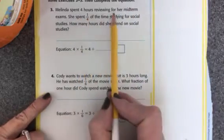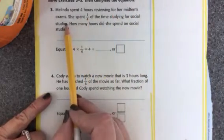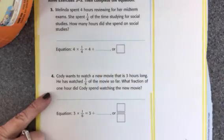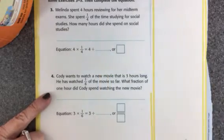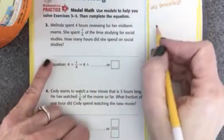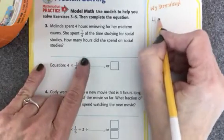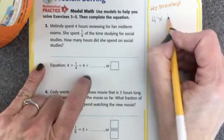Melinda spent four hours reviewing for her midterm exams. She spent one-fourth of the time studying for social studies. How many hours did she spend on social studies? All right, well, I know I'm doing 4 times one-fourth.